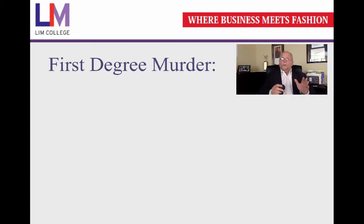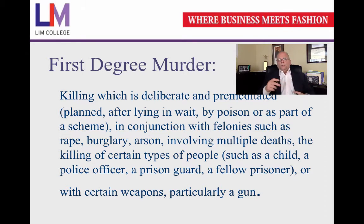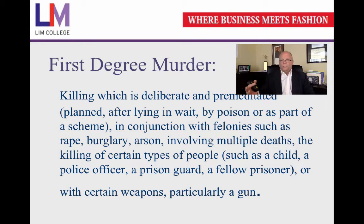Under criminal homicide, we have murder, and under murder we have first-degree murder. First-degree murder is killing which is deliberate and premeditated. This includes lying in wait, killings committed in conjunction with other felonies such as rape, burglary, or arson, killings involving multiple deaths, or killing a certain type of person like a child, police officer, or prison guard.